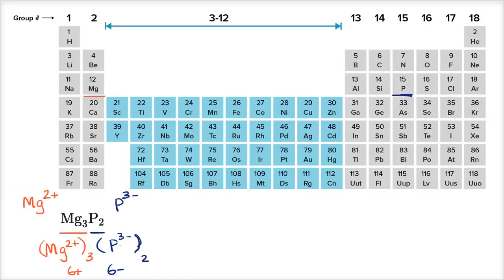But once again, what do we call this thing? Well, the convention is we just say the elemental name for the cation. So this is going to be magnesium. And then we say the ide version of the anion. So if this is phosphorus, we say phosphide.